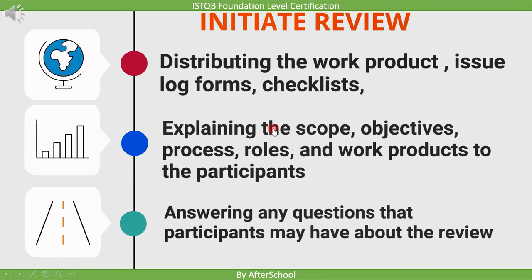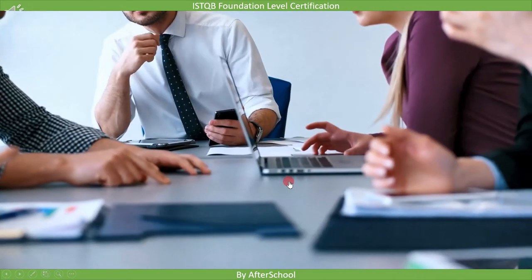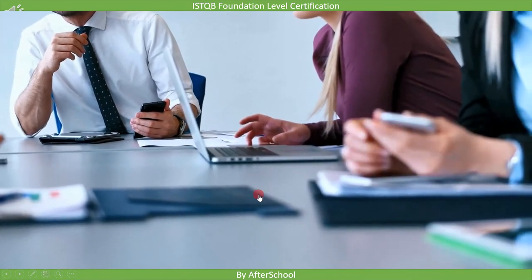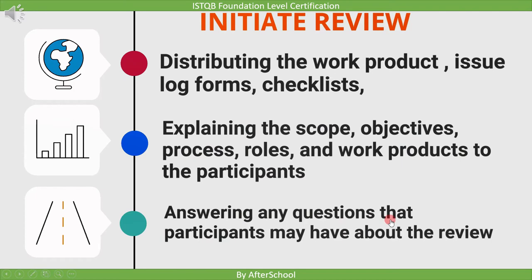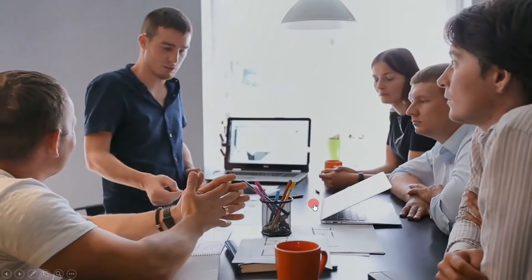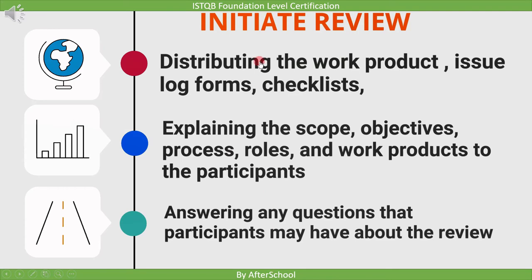Next, in review initiation, the scope, objectives, process, roles, and work products are explained to the participants. Before team members start reviewing the work product, we explain the scope of review, which type of review they need to perform, what role they will play in the process, and a short description of the work product is given. The last point is answering any questions that participants may have about the review. If team members have any doubts regarding the review process, its scope, or about the work product, they can ask here.